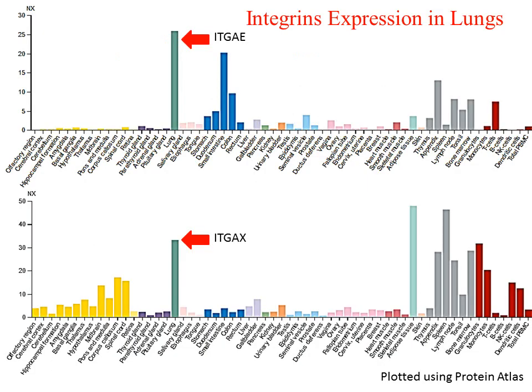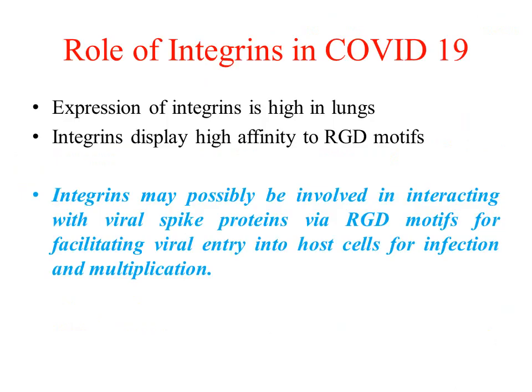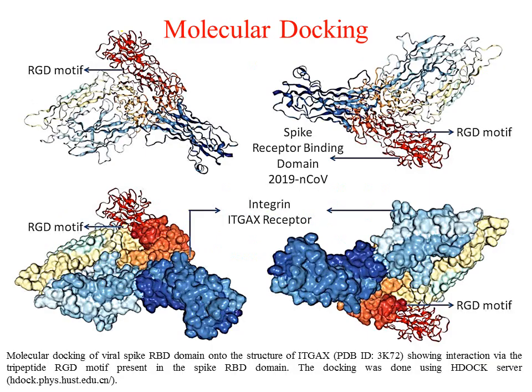I checked the expression of integrins in lung cells and found that expression of some integrins such as ITGA, ITGAX, and some others is very high. This indicated that integrins may have a role in virus attachment with host cells. I did bioinformatics-based molecular docking and found that the 2019 novel coronavirus binds to host cell integrins precisely through these RGD motifs, and divalent ions may be playing an important role in establishing these attachments.